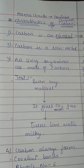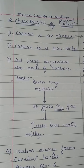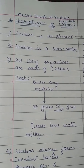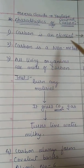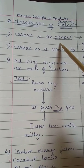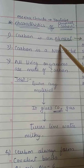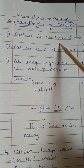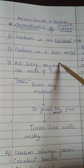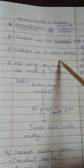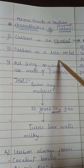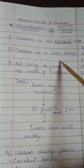Today I will be discussing the basic carbon atom and its chemical properties. Carbon is an element — element means it consists of a group of similar kind of atoms. Carbon is a non-metal.